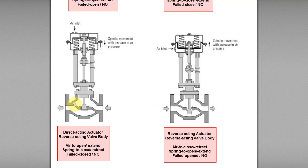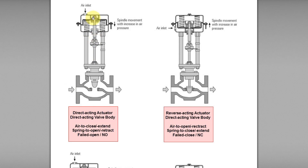This control valve is called an air-to-close control valve. Sometimes people use other terms such as air to extend, spring to open, spring to retract, or fail-open control valve. It is called air to close or air to extend because when air is applied to the top portion of the actuator, the instrument air pushes the diaphragm and spring downward. As a result, the stem — sometimes called spindle or shaft — extends downward to close the valve body.